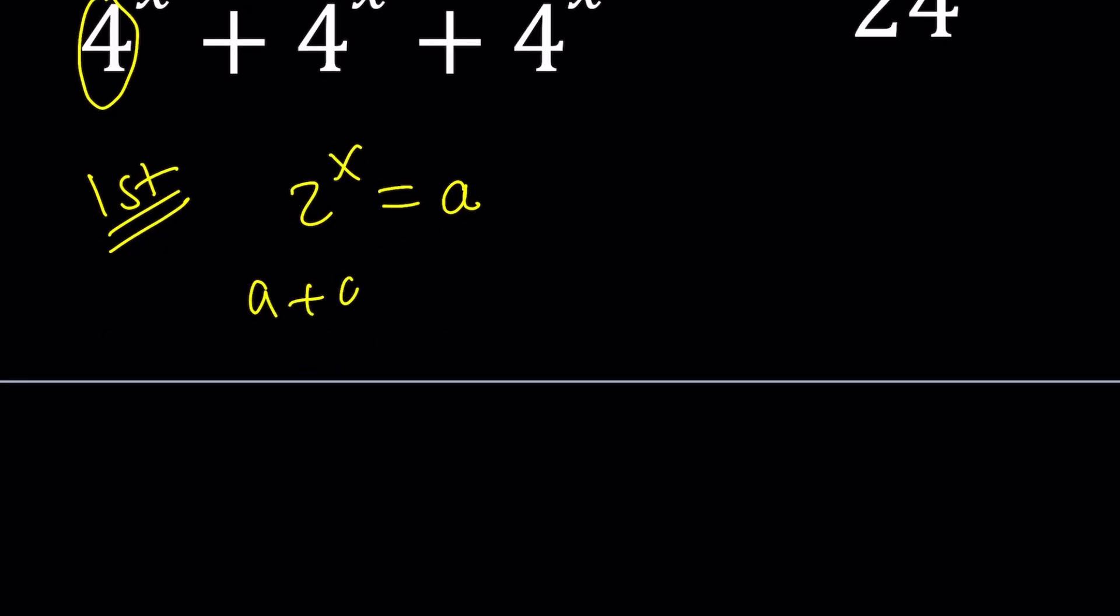a + a. And if 2^x is a, 4^x is just going to be a². Because if you square both sides, you get 4^x. So it's going to be a² + a² + a² = 1/24.